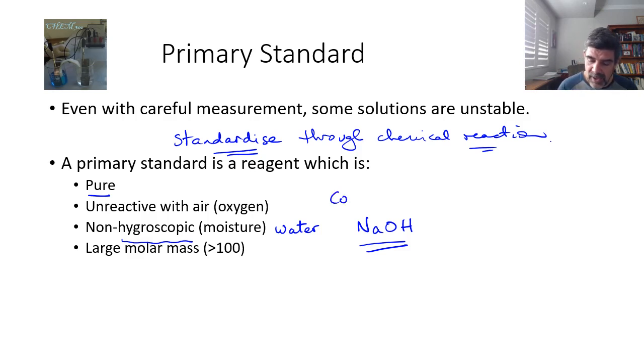Other things such as carbon dioxide can also be absorbed from the atmosphere. And when carbon dioxide reacts with water, it's also going to change the concentration of our solution. So there are certain types of substances that fall into this category of being good primary standards and others that aren't.